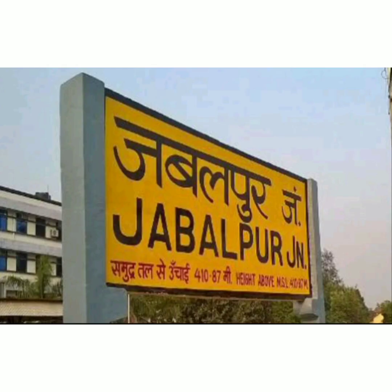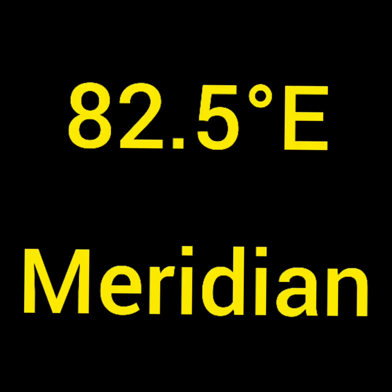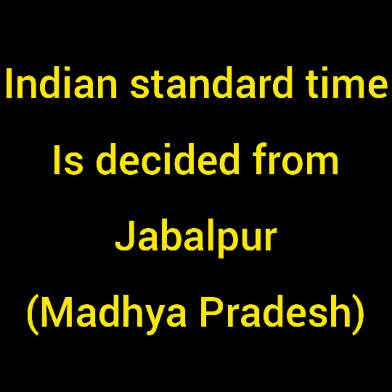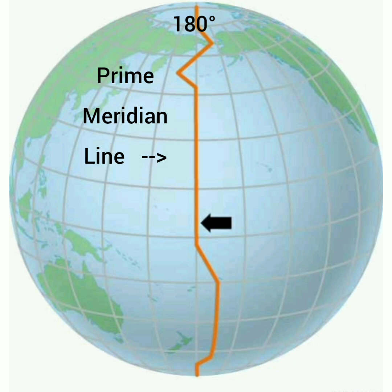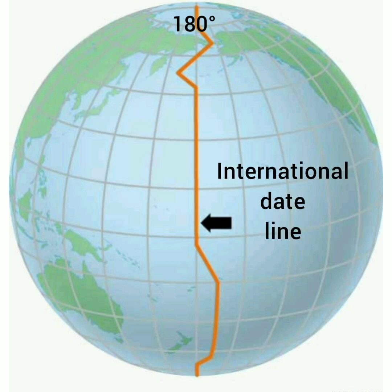For example, Jabalpur in Madhya Pradesh is situated near 82.5 degree east meridian, and standard Indian time is decided here. The prime meridian line decides the time in different countries. The meridian line situated at 180 degrees is called the International Date Line — the imaginary line from where the date changes by a day.